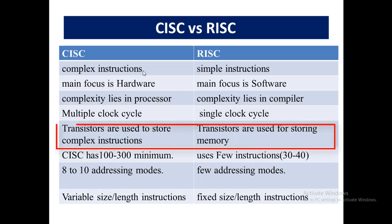In CISC, transistors are used to store complex instructions. While on the other hand in RISC, transistors are used for storing memory. As discussed earlier, CISC performs all calculations and operations in memory — it accesses the main memory directly. While RISC performs all functions in registers, so the transistors are used for storing memory.